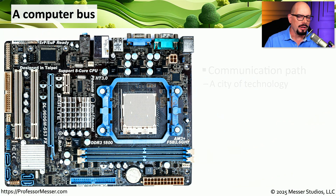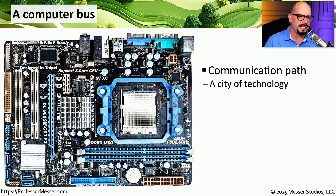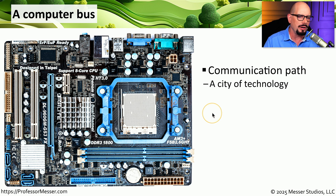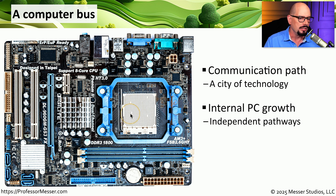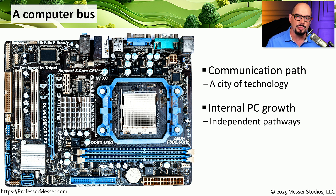If you were to look at a motherboard, it almost seems like a small city seen from the air. There are a lot of different areas of the motherboard, and it seems like there is some type of connectivity between all of these different components. That connectivity is what we refer to as a computer bus — a pathway that connects the different components of your motherboard to each other. For example, there's a bus between your memory slots and your CPU, and there's also a bus that connects all of your expansion slots. These different buses allow us to connect all of these diverse components on the motherboard so that they work as one single unit.